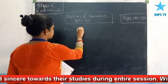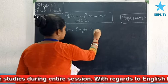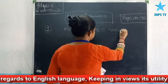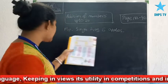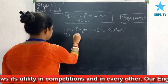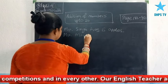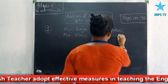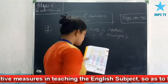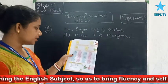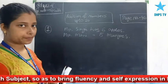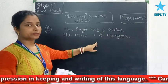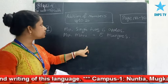Mr. C has 6 apples and Mr. Money has 5 mangoes. So the question is, how many fruits do they have altogether? You have to calculate the number of fruits all together.